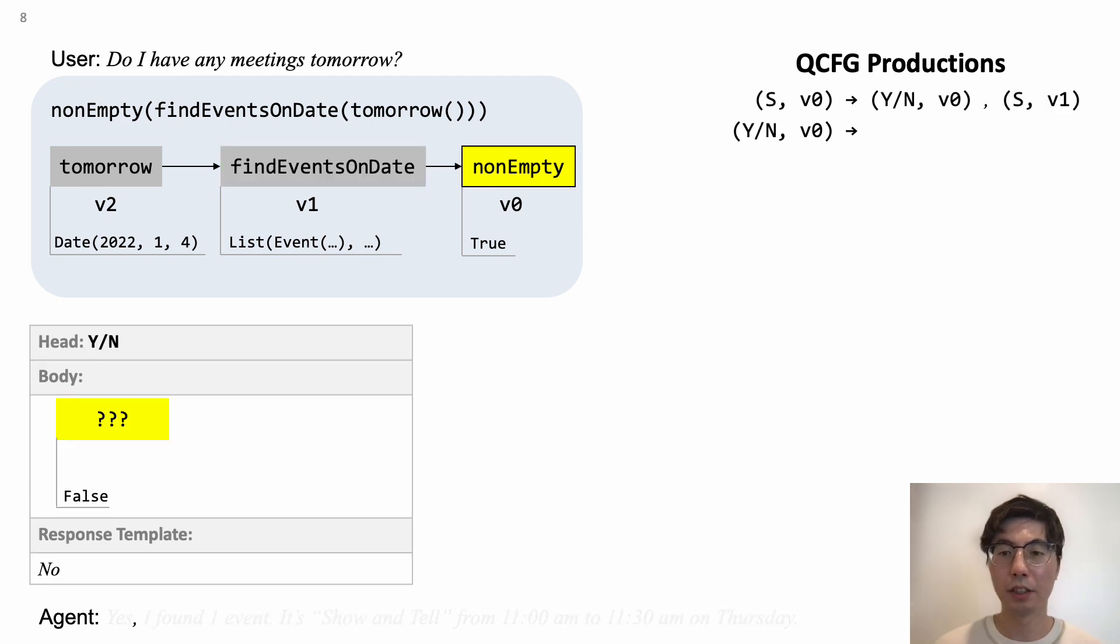So, we try a different rule, and this time it matches, and it produces a terminal symbol representing the string yes. And here, we move to the non-terminal SV1.